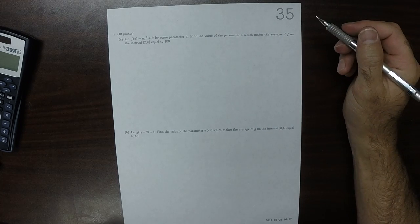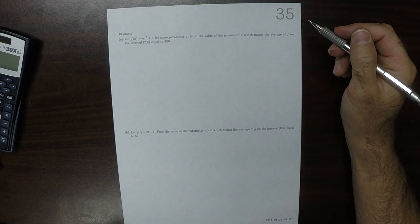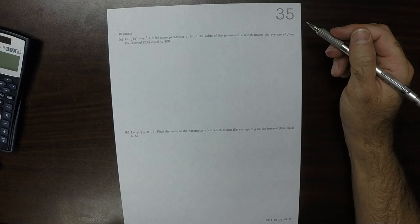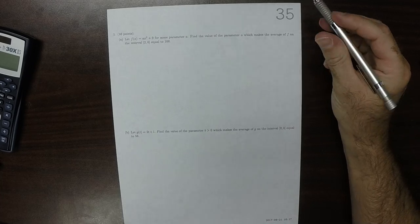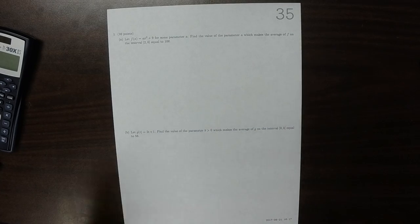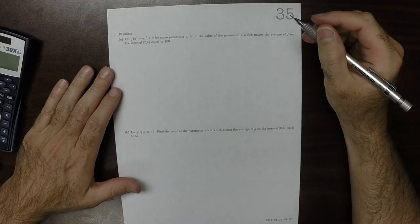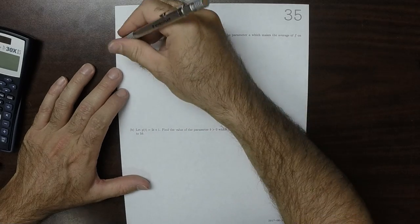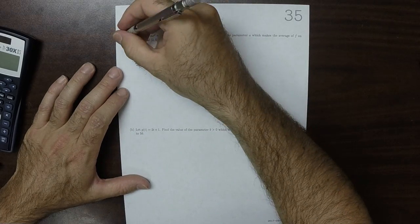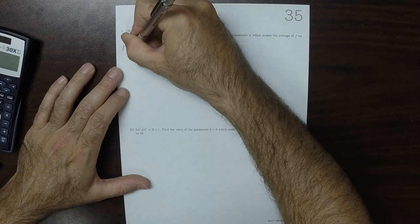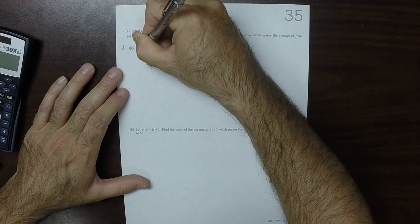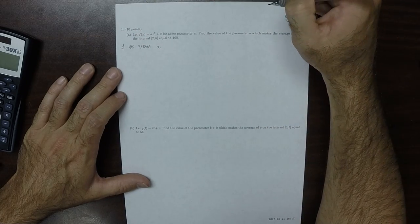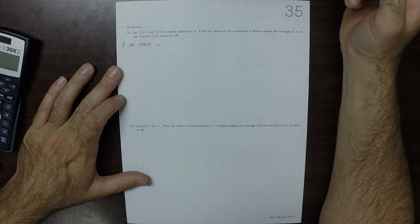This is the solution to Written Homework 35. For part a, we're given this function f. f has parameter a, and we're supposed to figure out the a that does something for us.